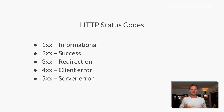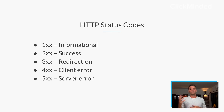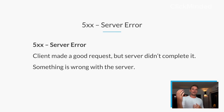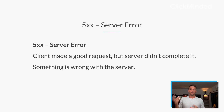The 100 block — these are informational requests. The 200 block — those are successful requests. The 300 block is for redirects. The 400 block will be for client errors, and the 500 block will be for server errors. That means the client made a good request, but the server didn't complete it. Something is wrong on the server side.